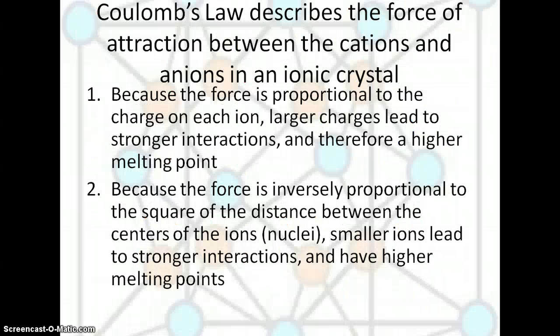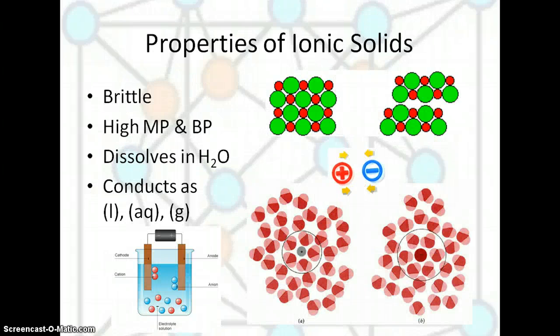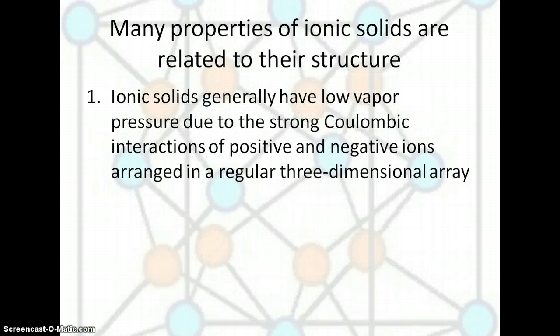Here's a little sum up of all of that, if you're interested on the word version. Properties of ionic solids: they tend to be brittle, have high melting and boiling points. They dissolve in H2O, and they conduct electricity when they are in the liquid form, the gas form, or the aqueous form. All of the properties that we just went through are all related to their structure.